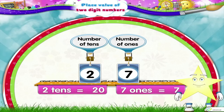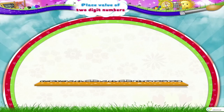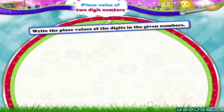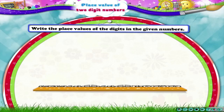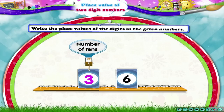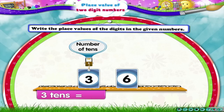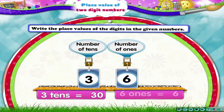Have you understood? Then let us write the place values of the digits in the given numbers. Let's see the number 36. What does the digit 3 show? The digit 3 shows 3 tens, so its place value is 30. The place value of 6 is 6, since it shows 6 ones.